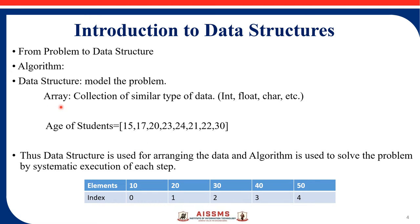Array is one example of a data structure. An array stores a collection of similar types of data. If we are going to store more than one integer value, it is an integer array. If we store float values, it is a float array. For character values, it is a character array. For the age of students, all these values are integers, so in one variable we can store a number of values using an array structure.